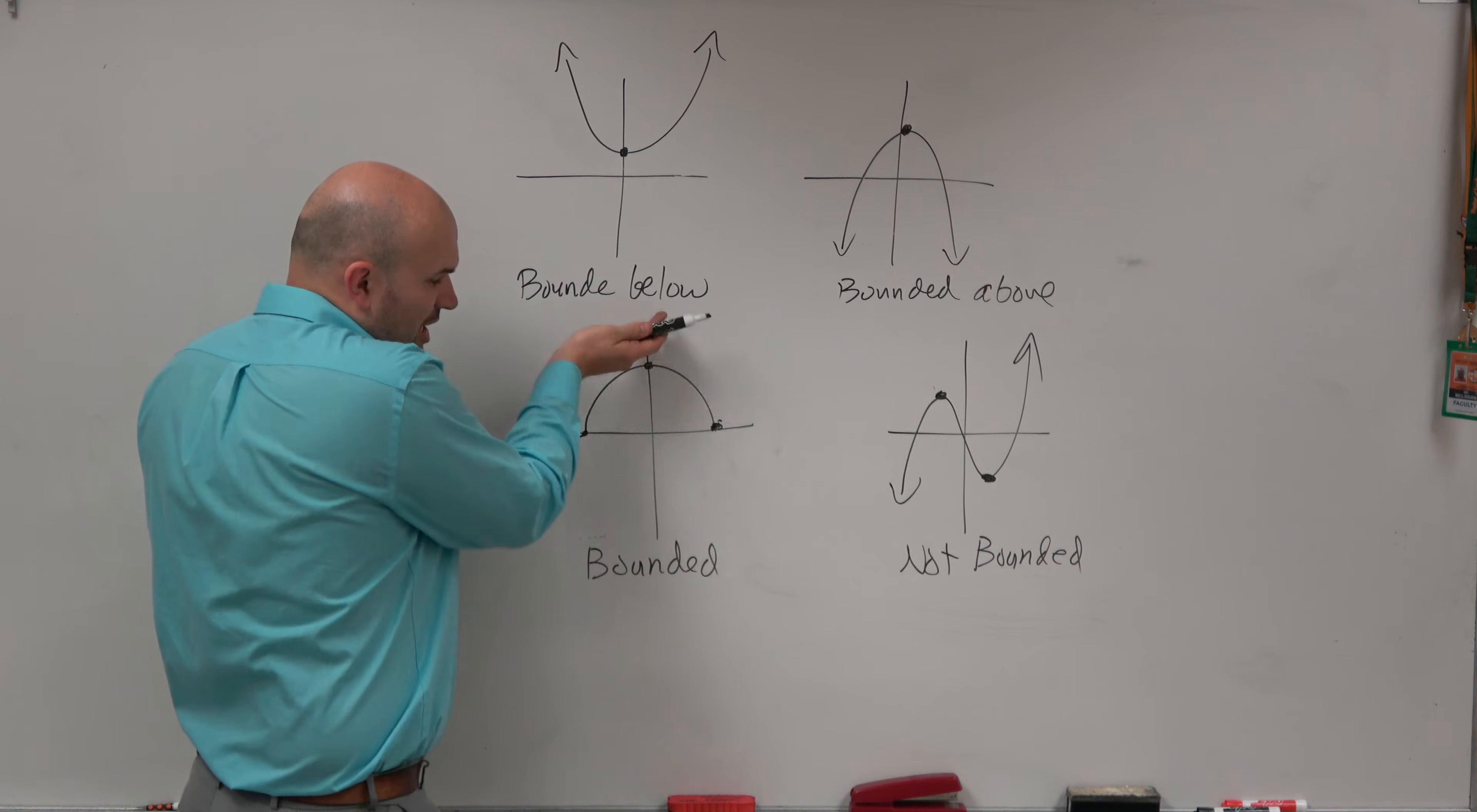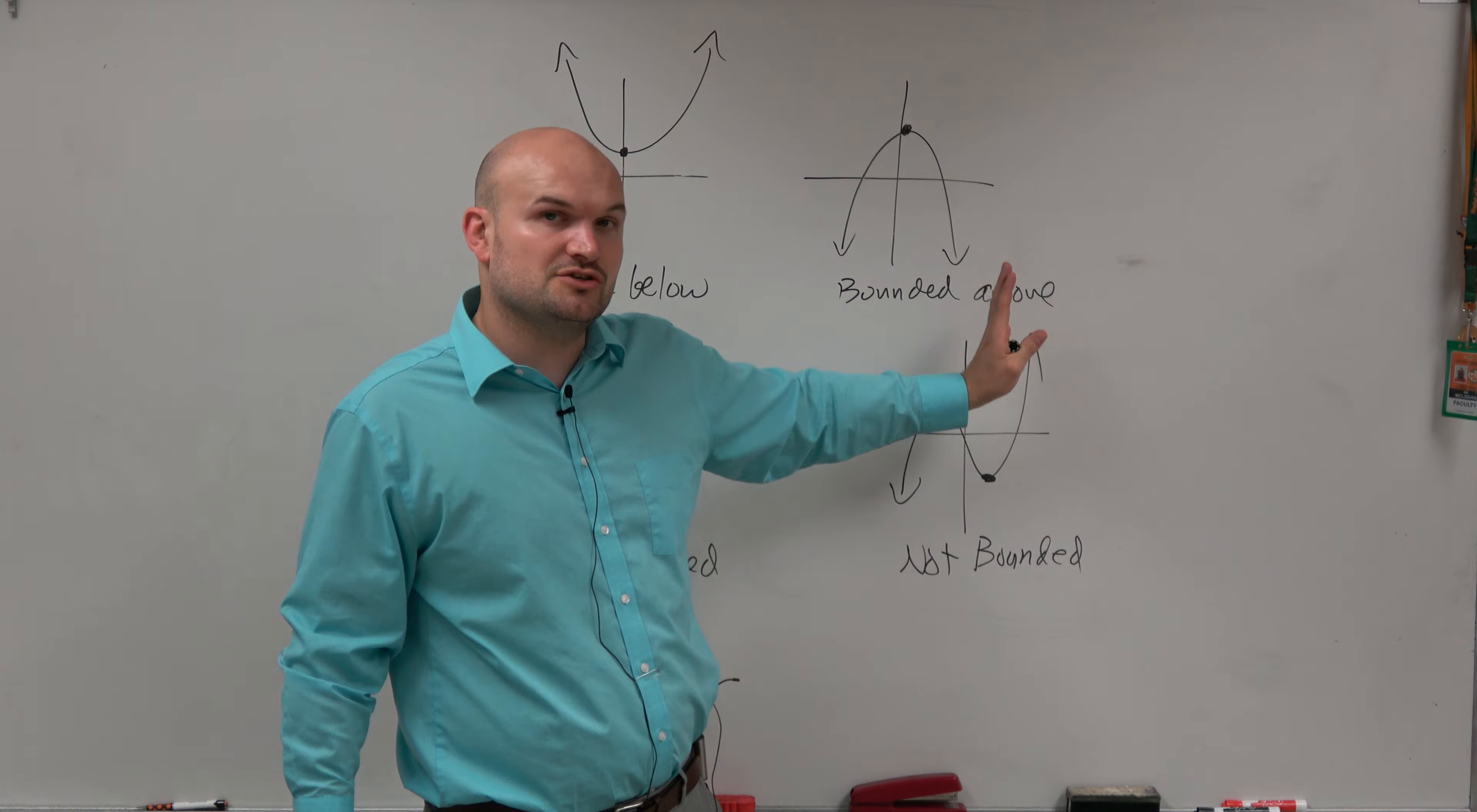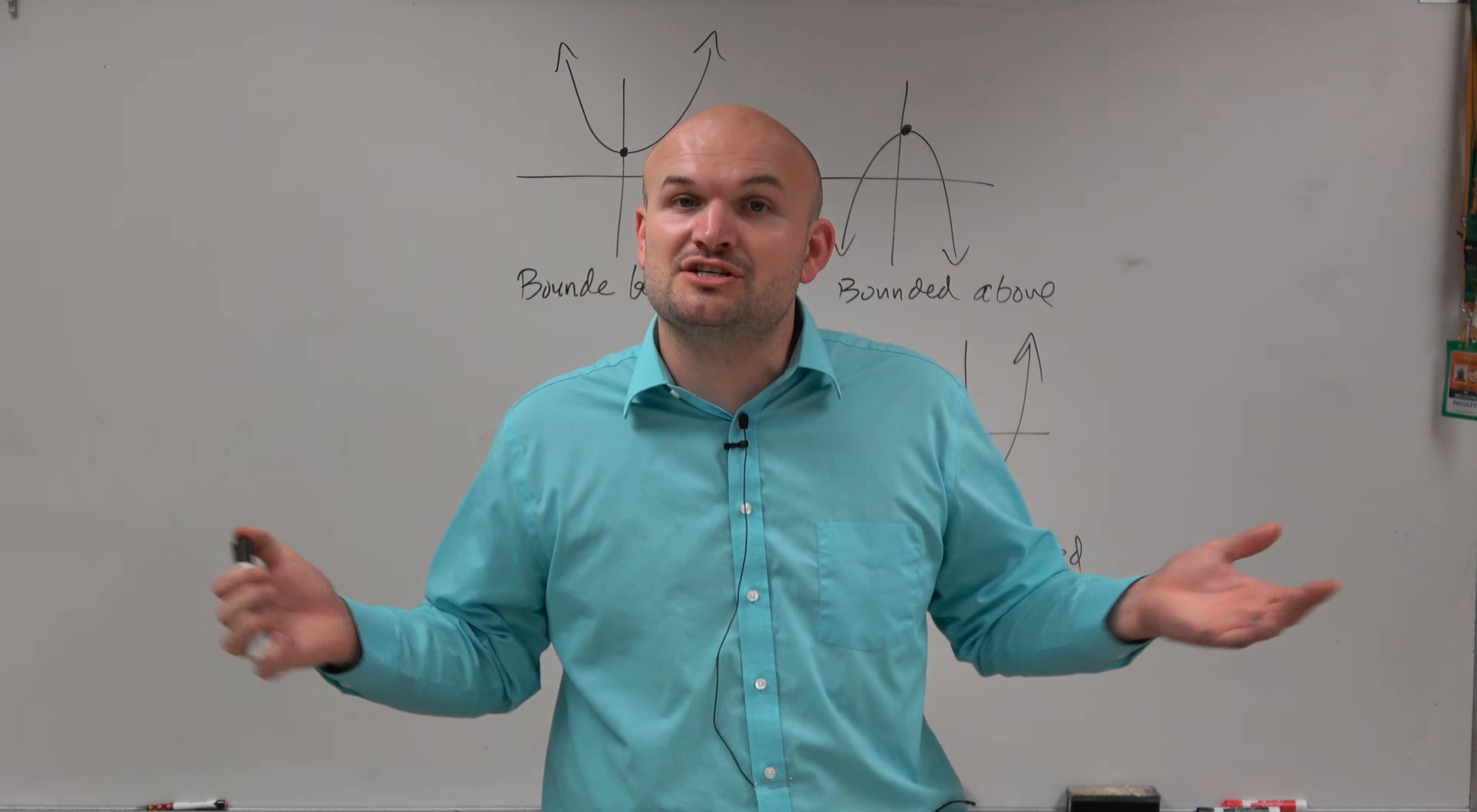If the graph is contained above and below, we call the graph bounded. And if the graph continues indefinitely in one direction, as well as another direction, then we say the graph is not bounded. So there you go, ladies and gentlemen. That is the basic definition here of bounded.